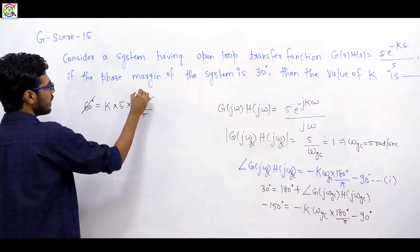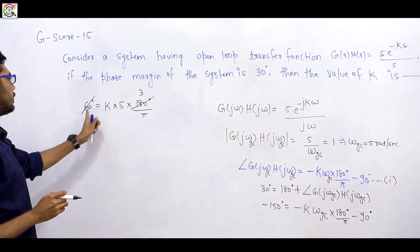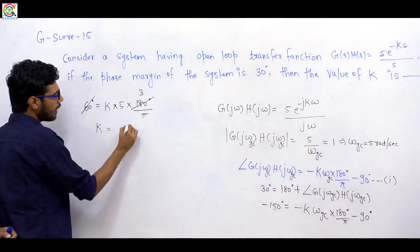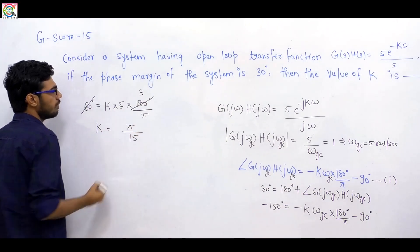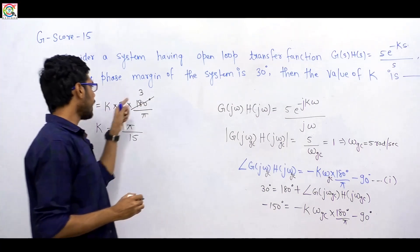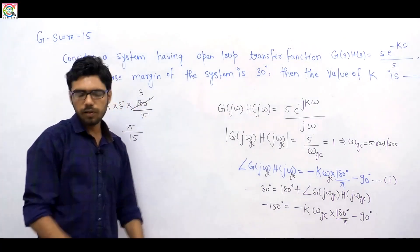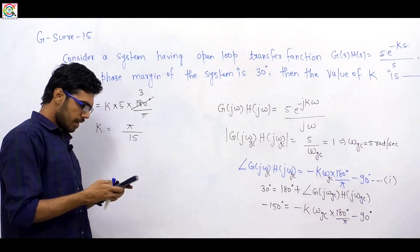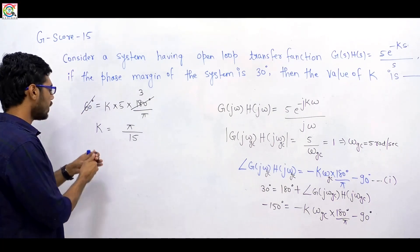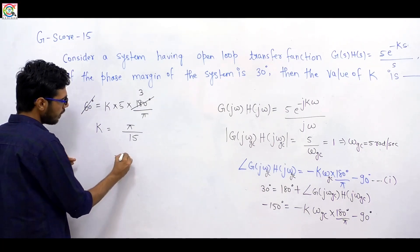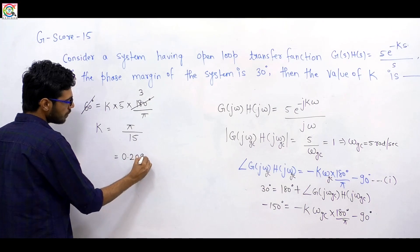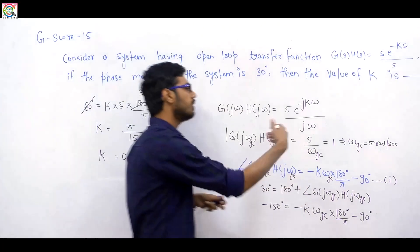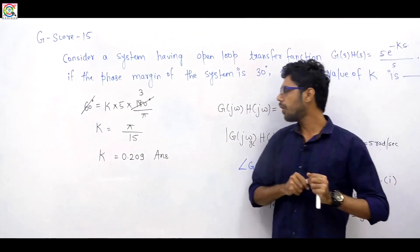Solving the equation: 60° = k × 5 × (180/π). This simplifies to k = π/15, because 60 × 3 = 180. So k = π/15 ≈ 0.209. This is our answer. Since this is a numerical answer type question, you enter 0.209.